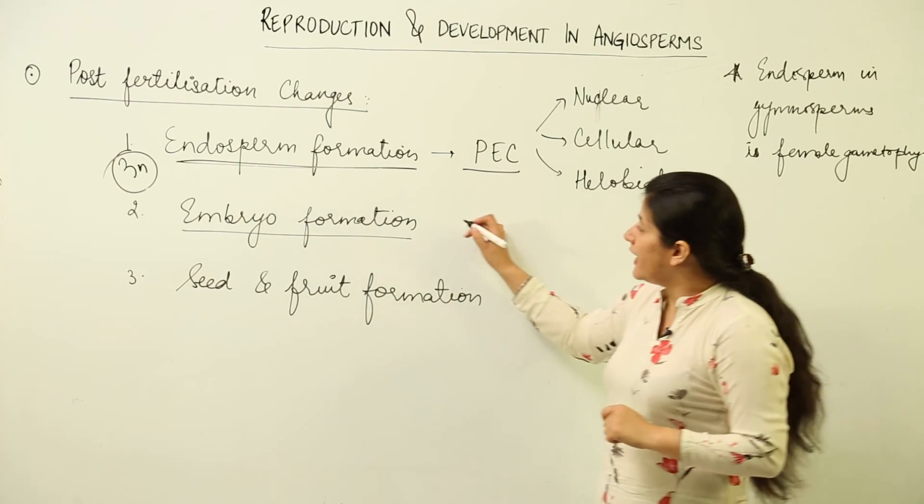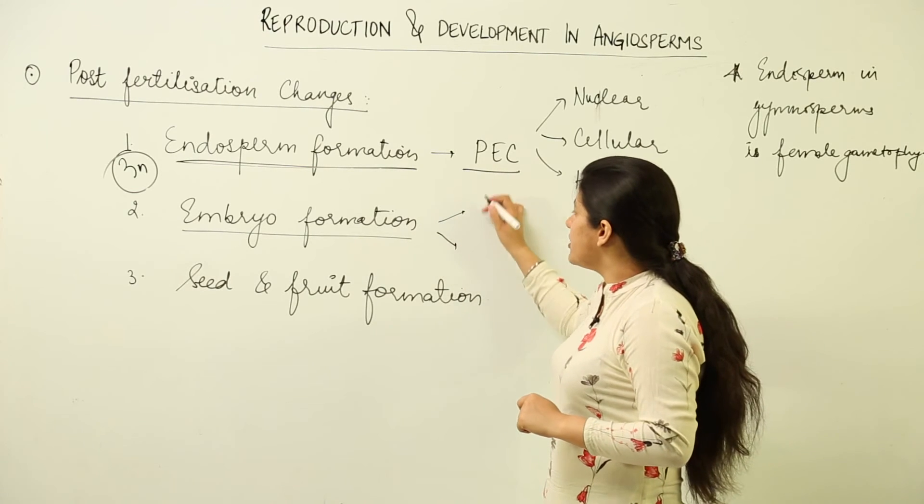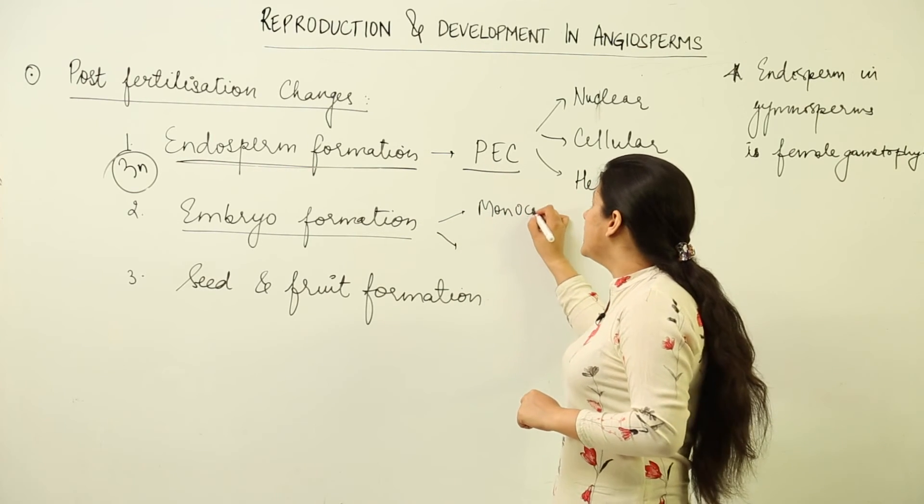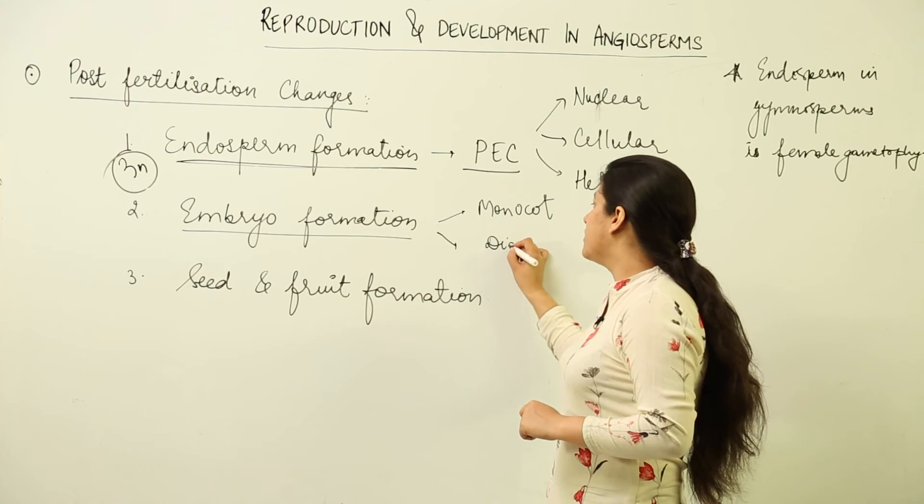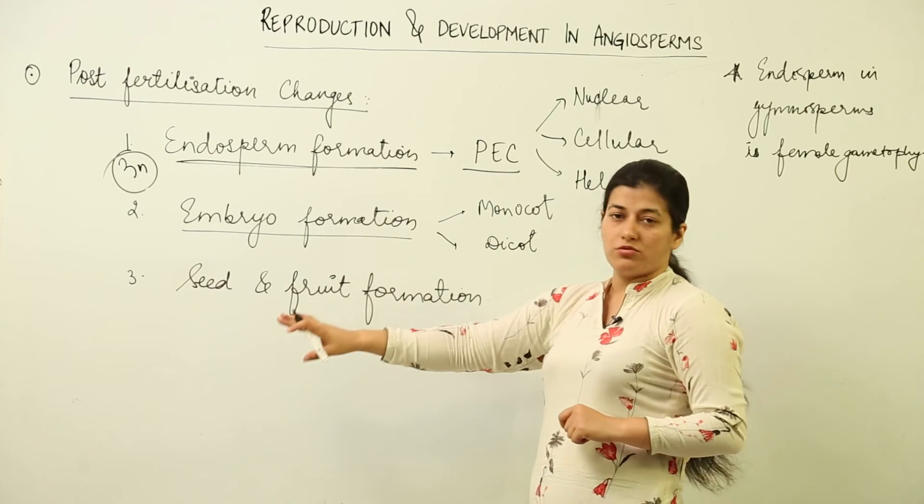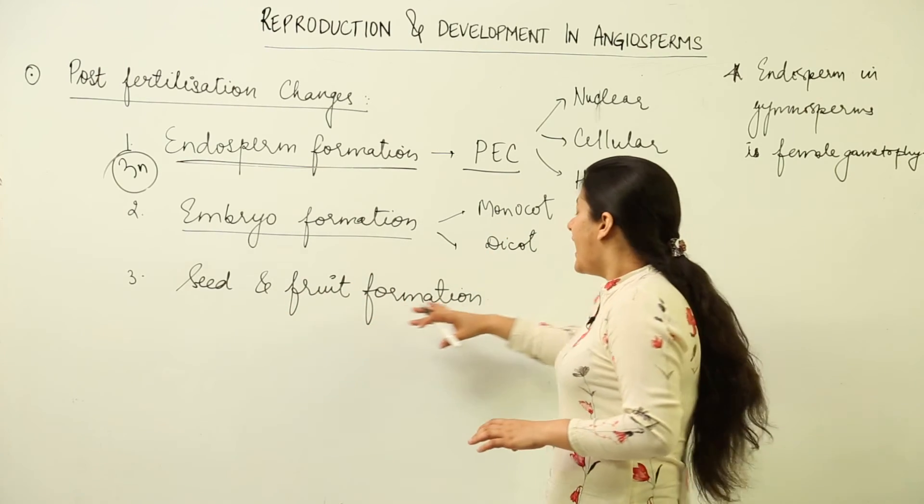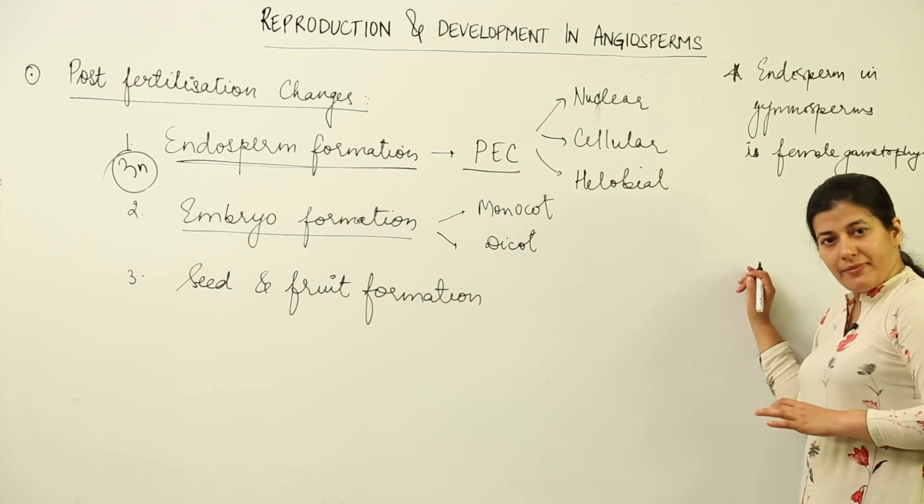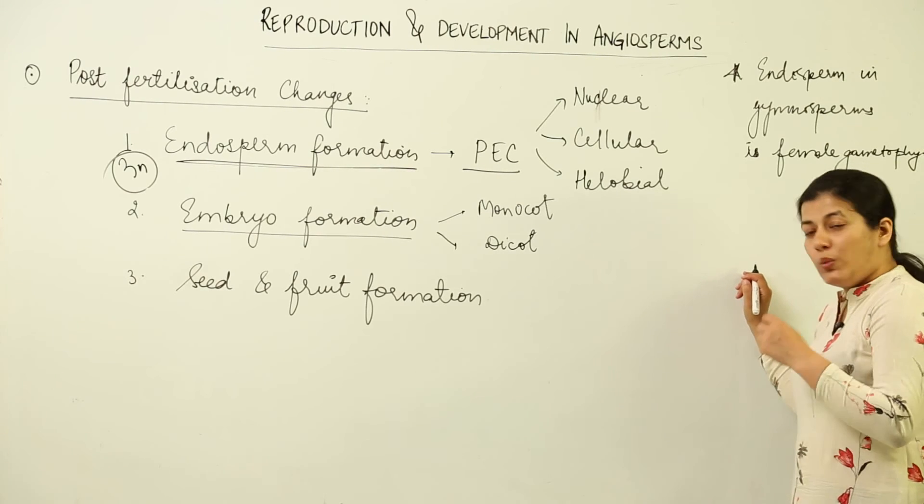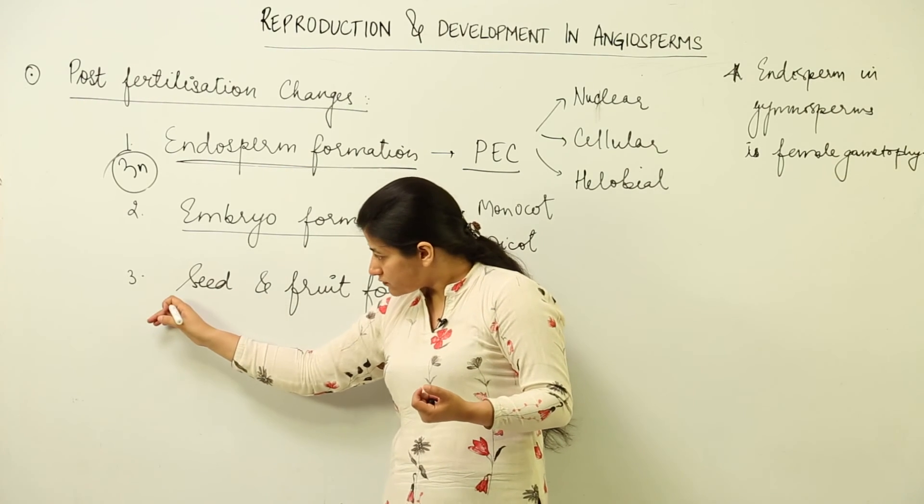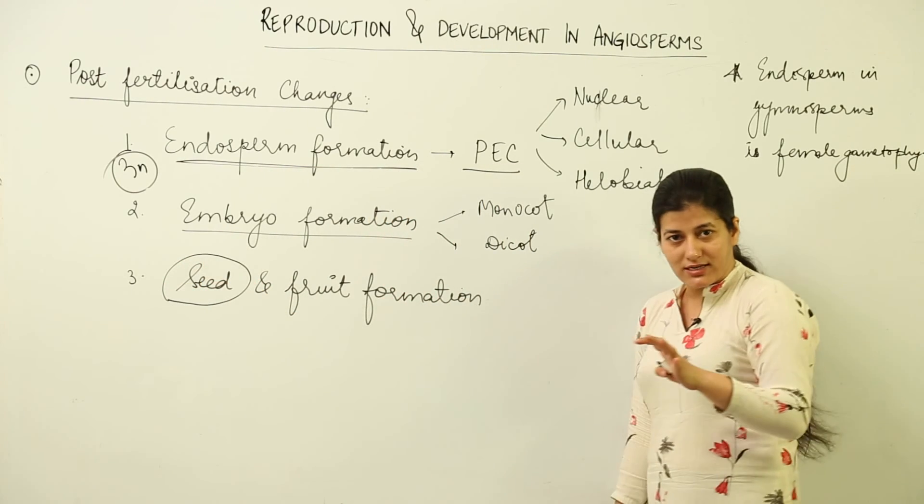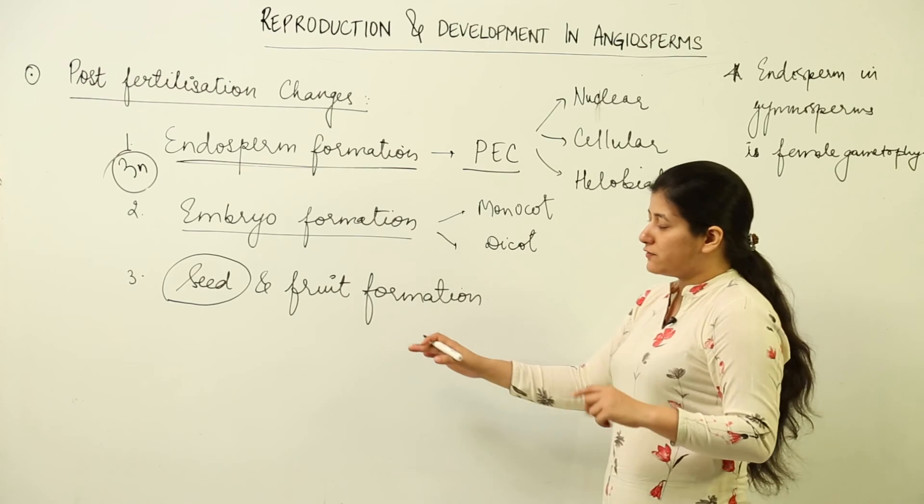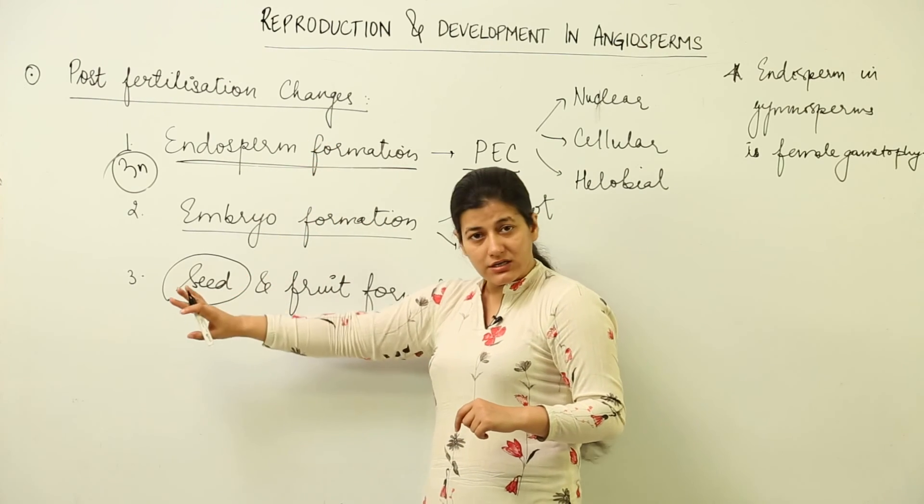In embryo formation, the embryo could be a monocot embryo giving rise to a monocot seed, or a dicot embryo giving rise to a dicot seed. When these developments are taking place within the ovule, it gets converted into a seed once embryo stops its development.